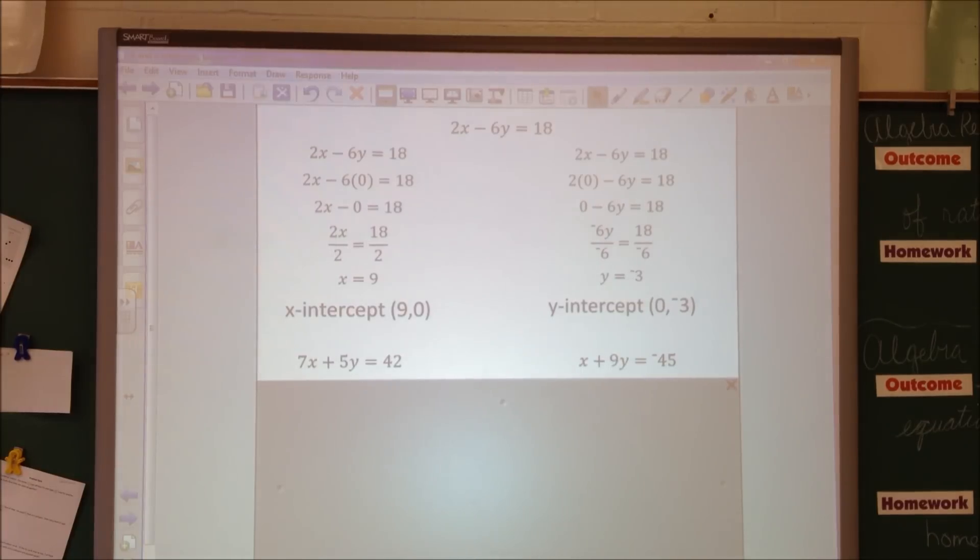Here are two more. If you want to, you can write them down and try them without me. I'm going to show you a fast trick that doesn't require as much writing. Knowing that the y-intercept is equal to 0, if I cover this up because anything times 0 is 0, I get 7x equals 42. Divide both sides by 7, and I get x equals 6. So the x-intercept is at 0, 6.